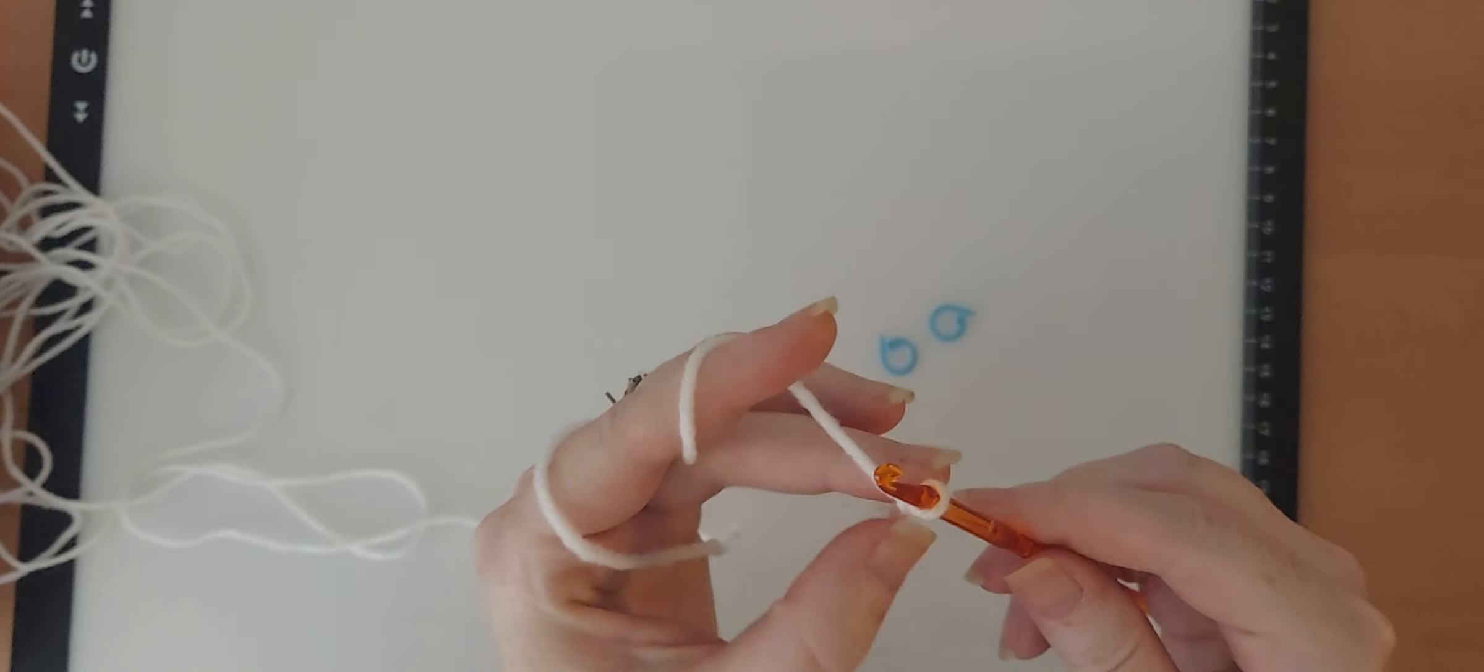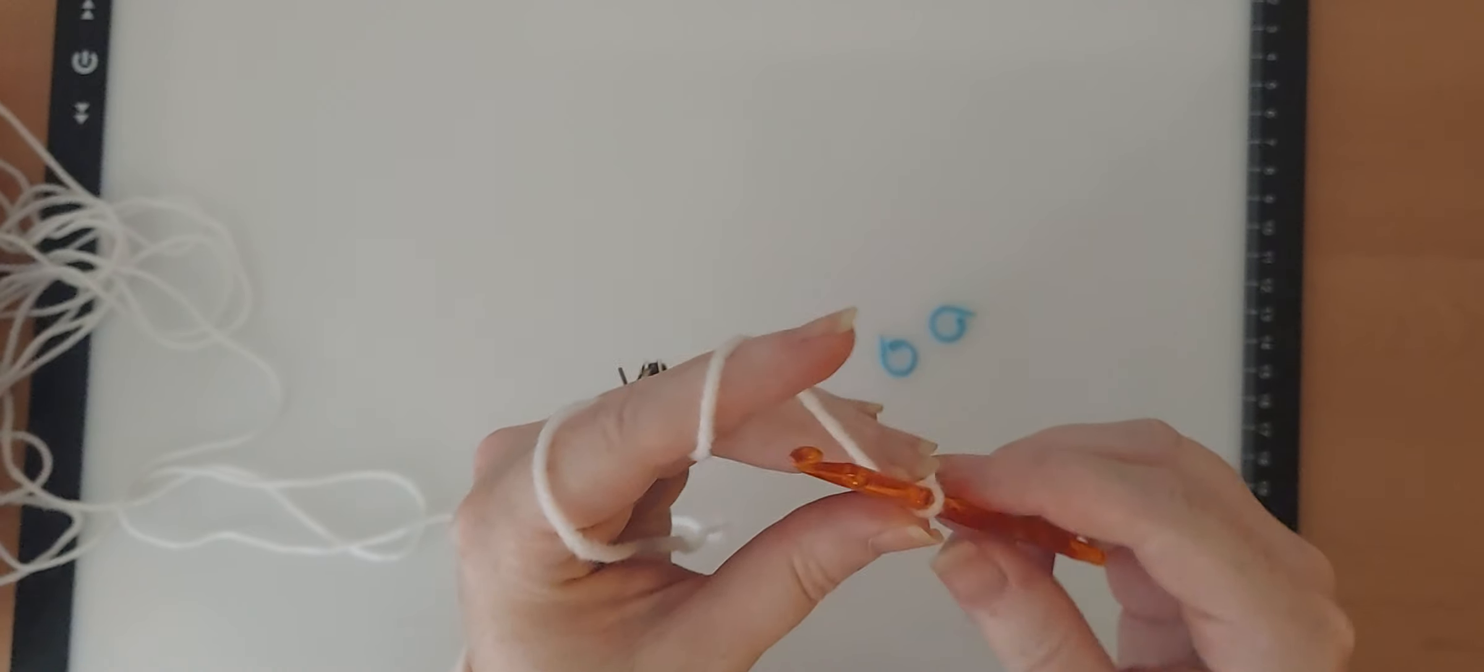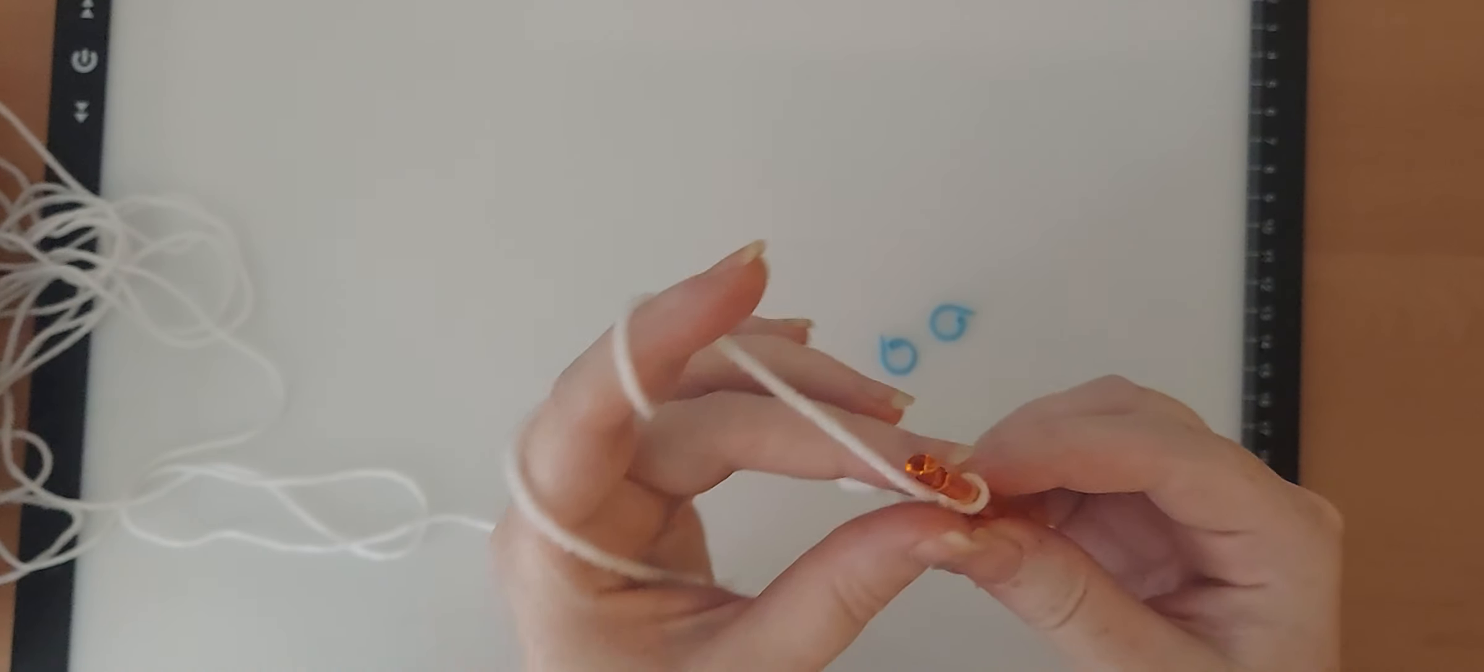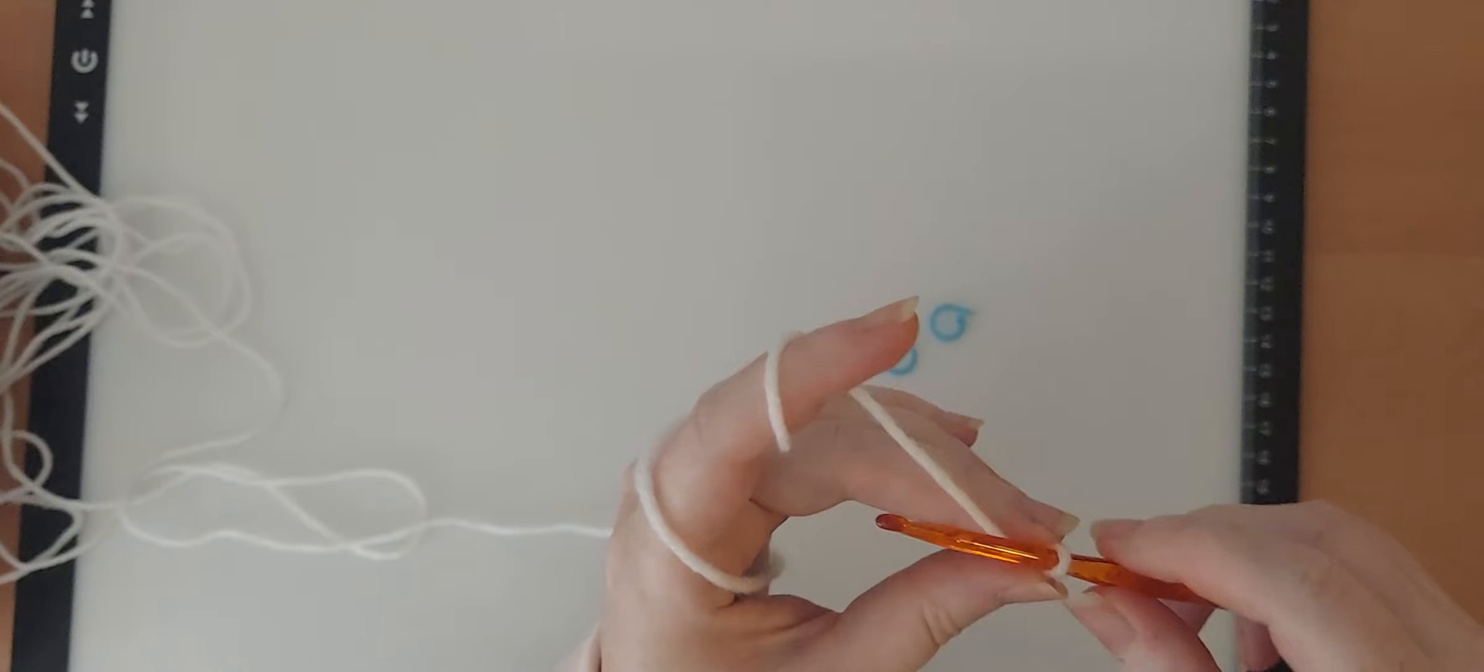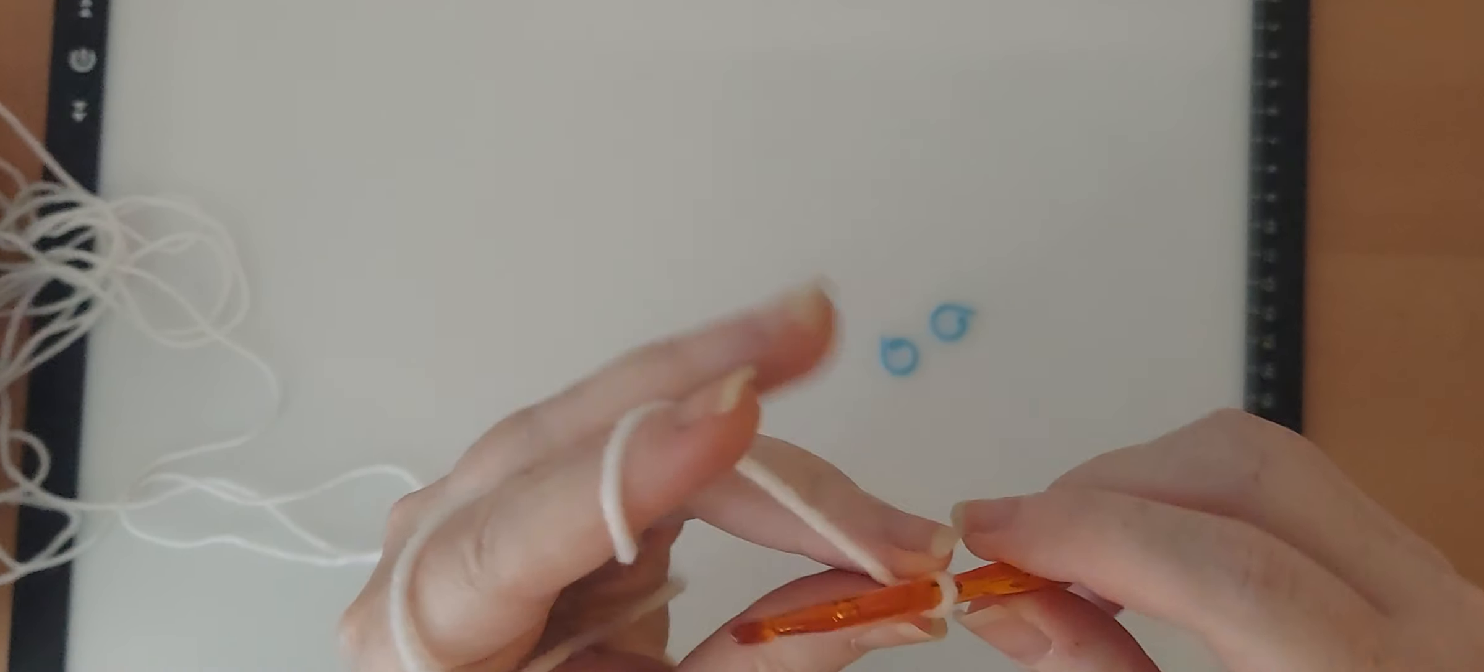What I do when I start is I hold the end of the slipknot, right here where it's tied, with my middle finger and my thumb. Then you get the yarn so that you have some tension. You don't want it to be super loose or anything like that.